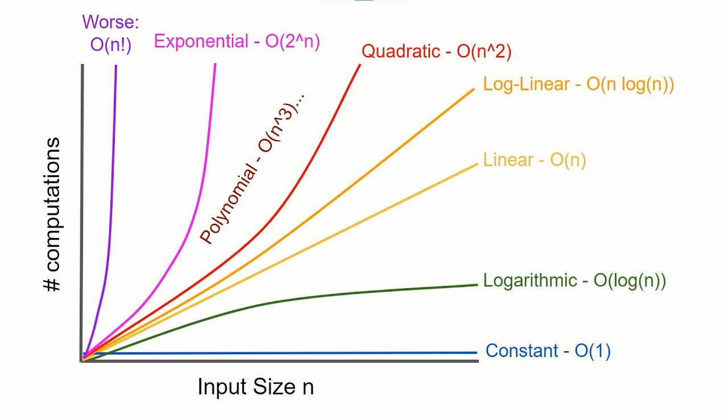Going back to constant time versus linear time versus quadratic time — and obviously there's stuff that takes even longer than that — do you have any common examples of what falls into each category? Like an example of something in constant time, something in linear time, et cetera?